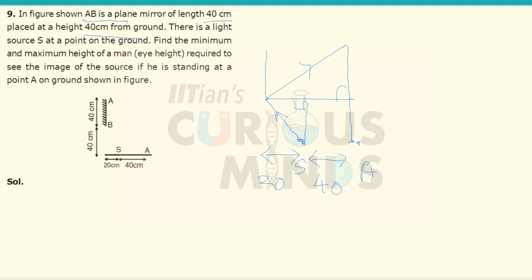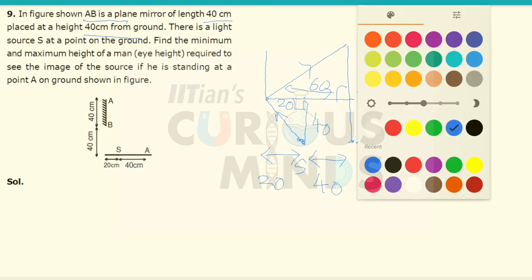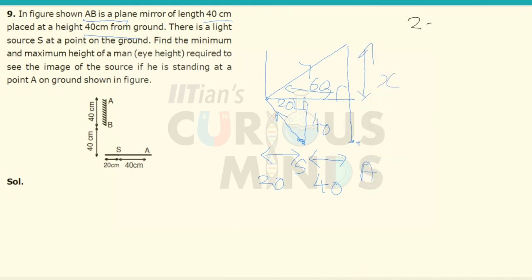This height is 40. Let this unknown height be X. This distance is 20, and this total distance will be equal to 60 centimeters. So I can say that 20 divided by 40 will be equal to 60 divided by X.